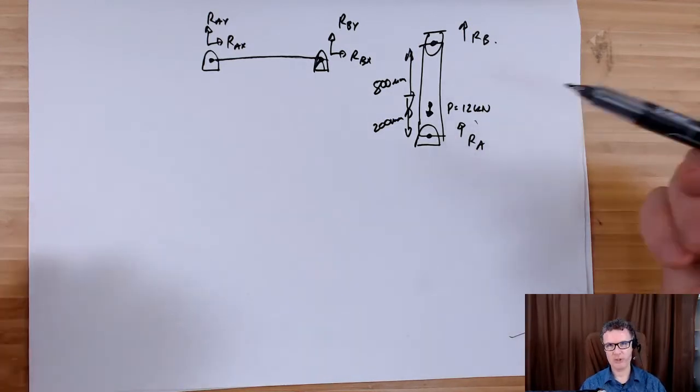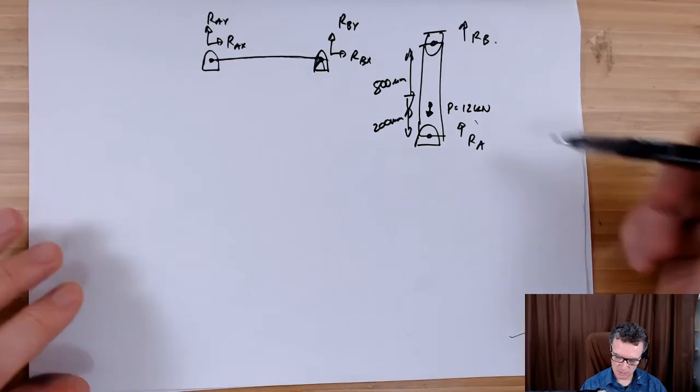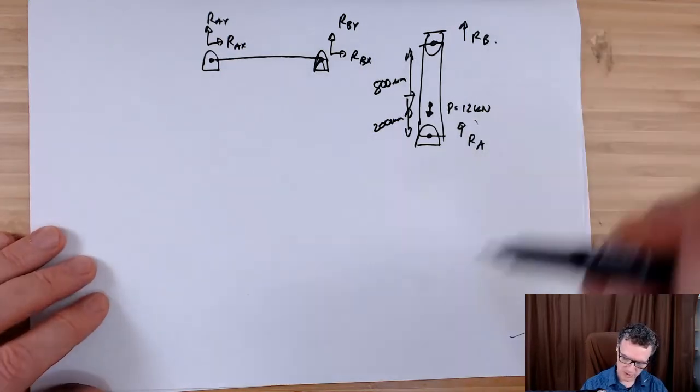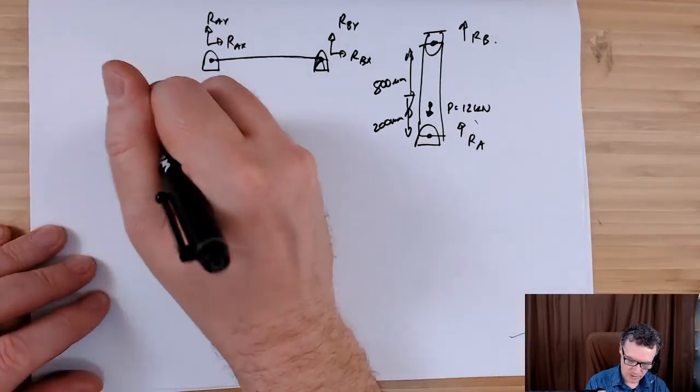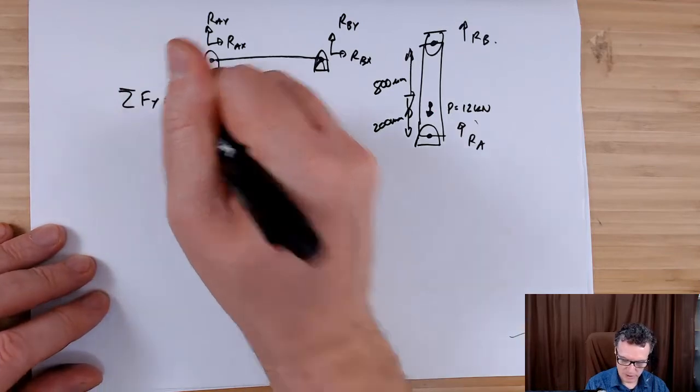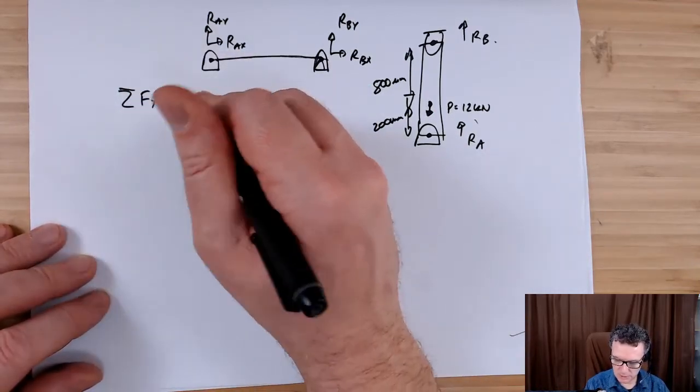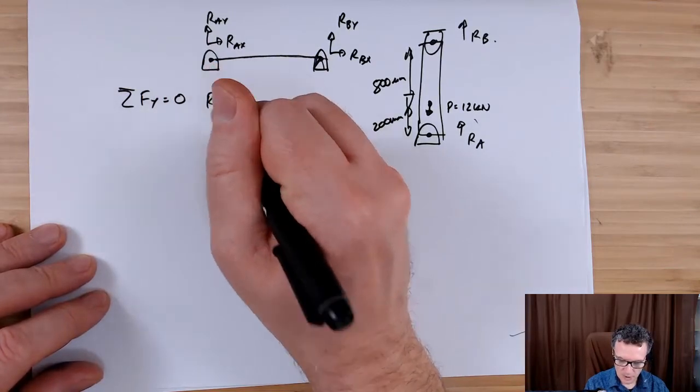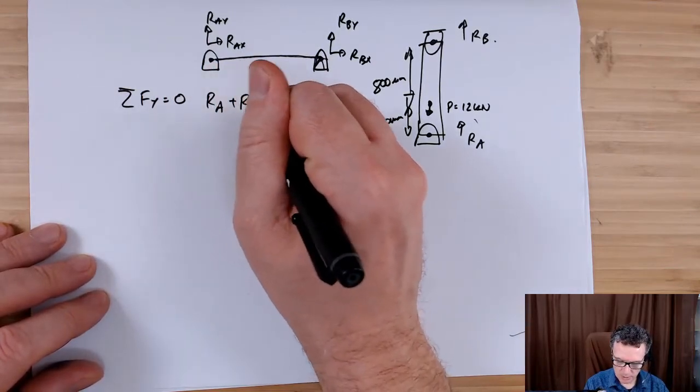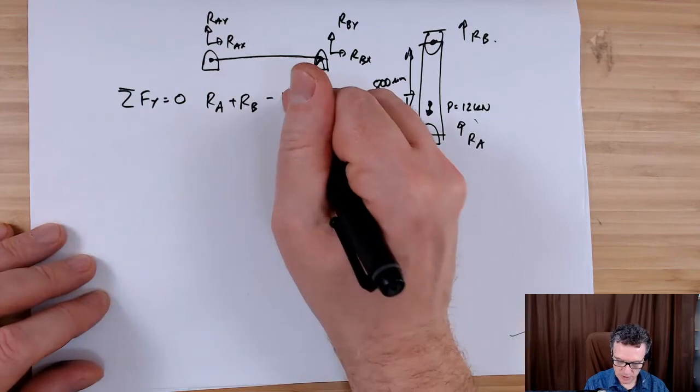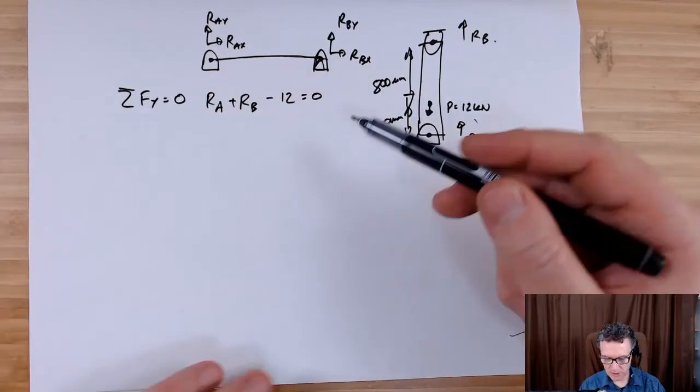The first thing we would do is look at summing up the forces. So sum of the forces in the y direction - we won't bother with the x direction, there's nothing going on. We've got Ra going upwards, Rb going upwards, and the 12 kilonewtons coming downwards, and that'll give you my first equation that I can use.